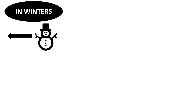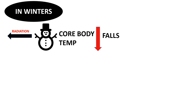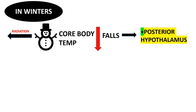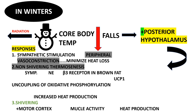Now, during winters, when core body temperature drops below 37 degrees Celsius, this stimulates the posterior hypothalamus. The activated posterior hypothalamus produces appropriate responses to return temperature back to normal. Response number one is peripheral vasoconstriction, which minimizes heat loss from the body.